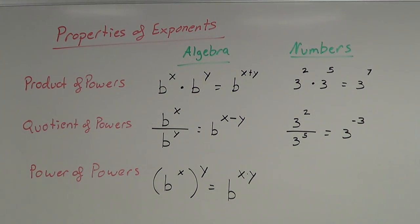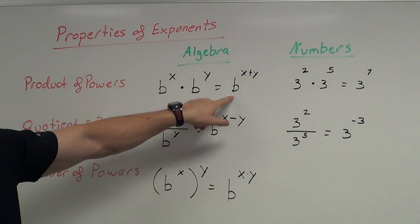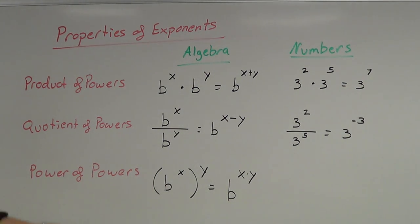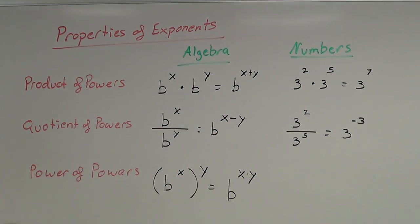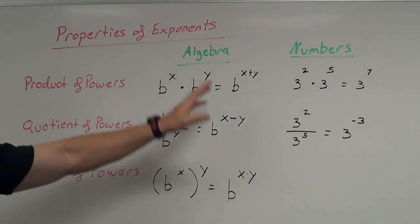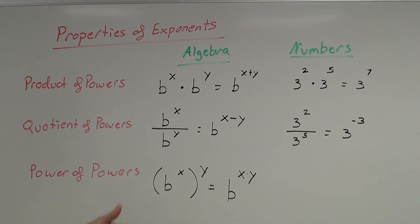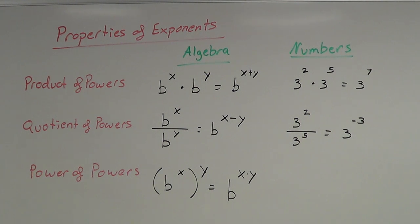Notice the pattern: product gives b to the x plus y, quotient gives b to the x minus y, and power of powers gives b to the x times y. So we're using add, subtract, and multiply on the exponents. If you're good at remembering patterns, this is a helpful way to memorize the rules for these three properties.